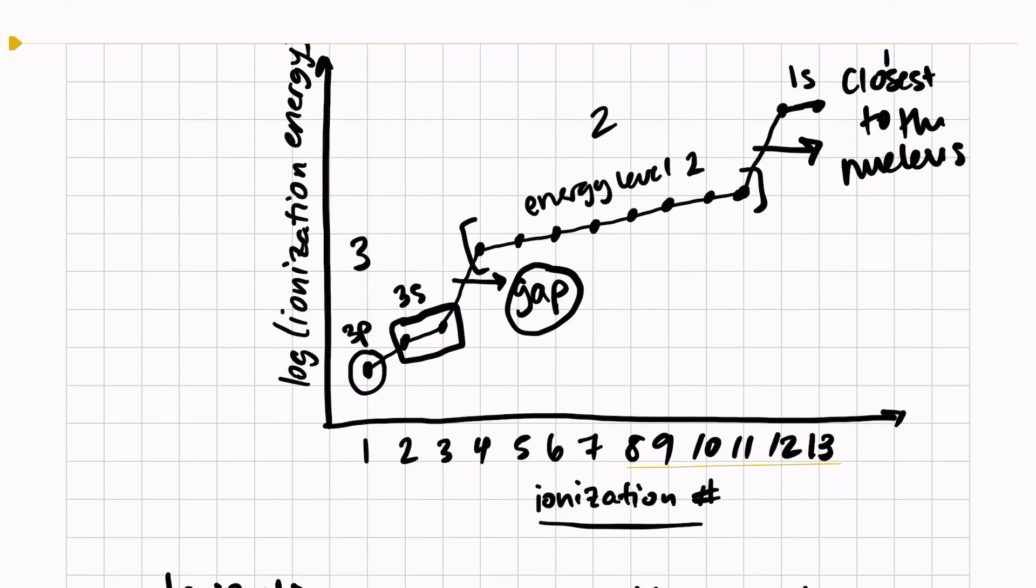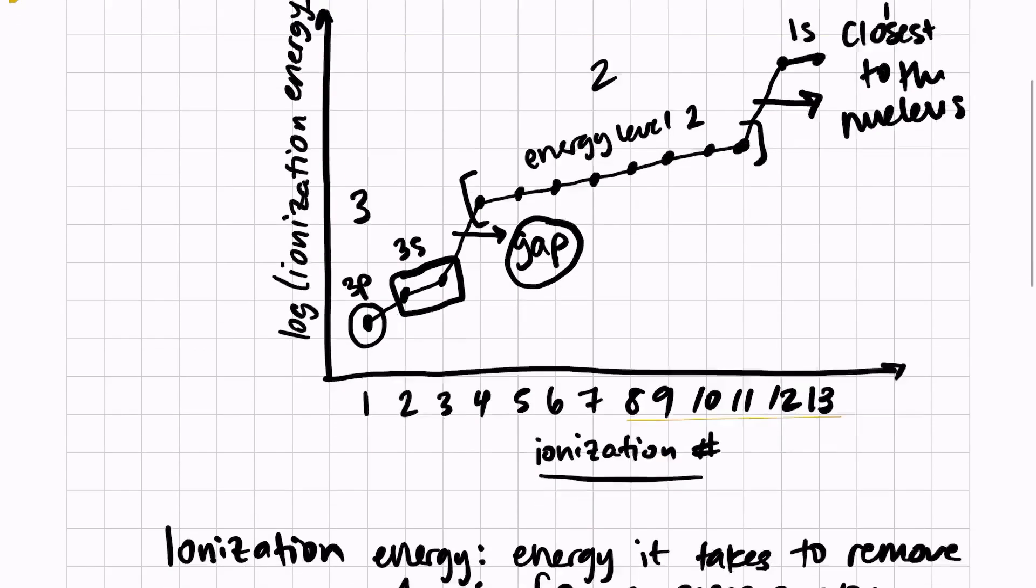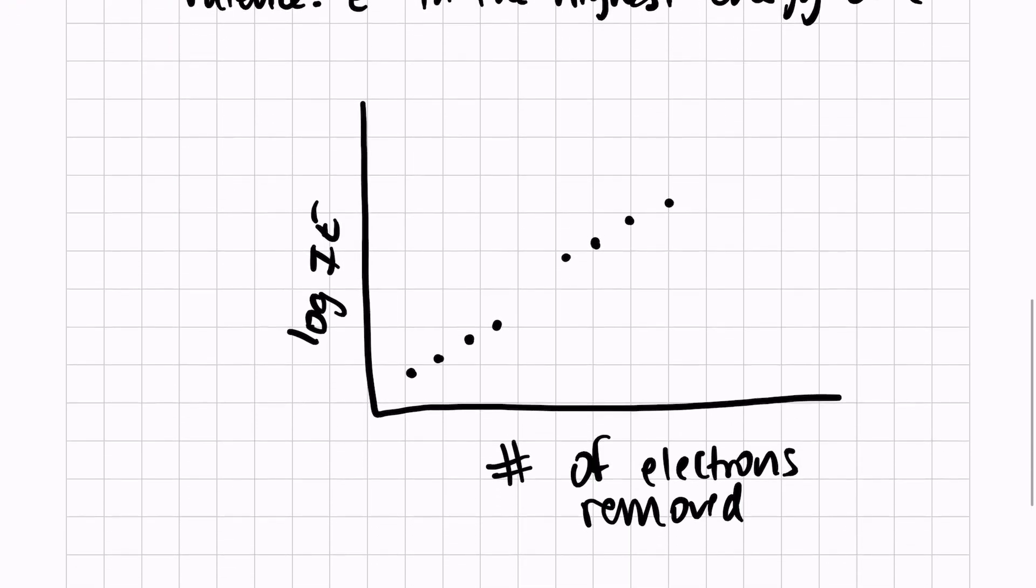Let's say that I had a graph like this. This is all the information that I have, and I'm asked, what group is this element in? What is the group number?